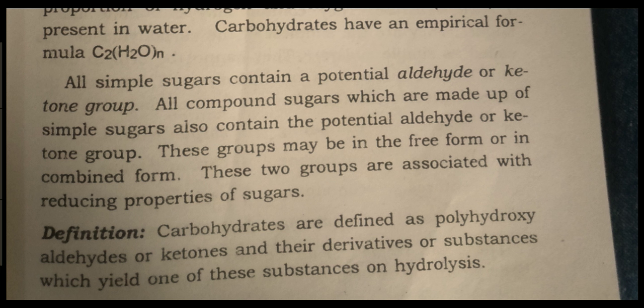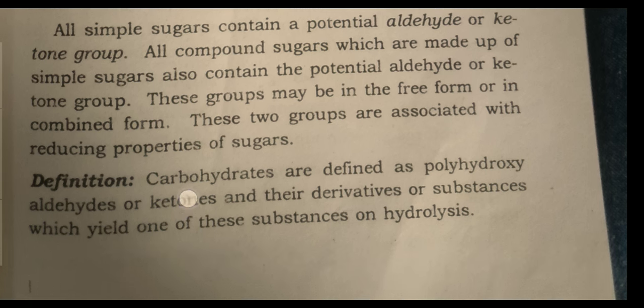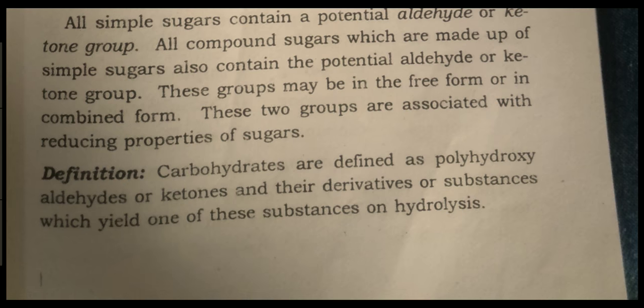All compound sugars, which are made up of simple sugars, also contain potential aldehyde and ketone groups. These groups may be in free or combined form. These two groups are associated with the reducing property of sugars.